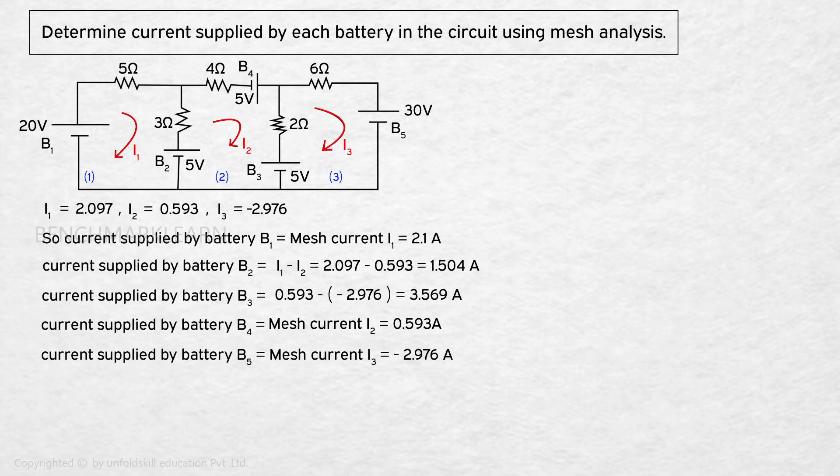Current supplied by battery B5 equal to mesh current I3 which is equal to minus 2.976 ampere. The negative sign indicates that current direction is opposite to the given direction in figure.